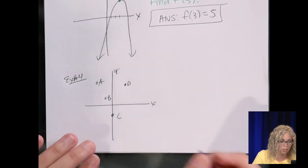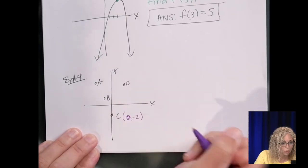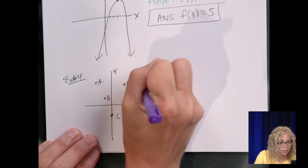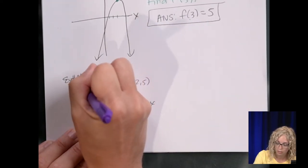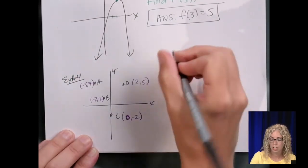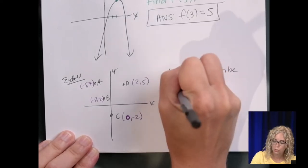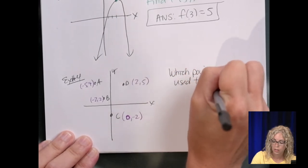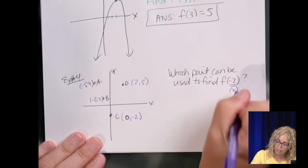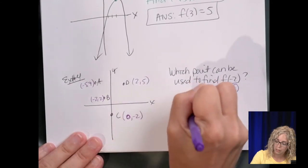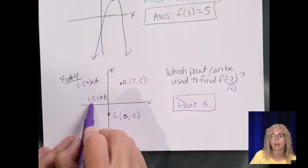But because I don't, I'm just sketching it, I'm going to write down that the coordinates for c are 0, negative 2, d is 2, 5, b is negative 2, 2, and a is negative 5, 7. So the question says, which point can be used to find f of negative 2? So when x is negative 2, remember that's your x, we would use point b. Because point b has a negative 2 for the x value.